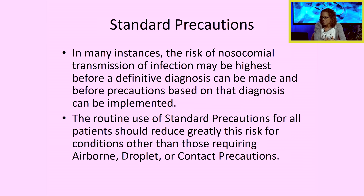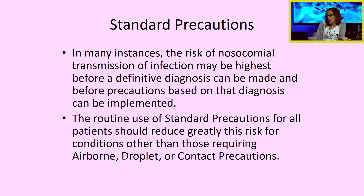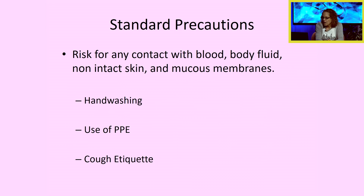Similarly, in a suspected case of tuberculosis, if we think a patient might have TB, we'll put them on isolation before the official diagnosis because lab results take time and we don't want to spread infection while waiting. The routine use of standard precautions for all patients should greatly reduce the risk beyond those cases requiring airborne, droplet, or contact precautions. Standard precautions include good hand washing, use of PPE, and good cough etiquette — coughing into your elbow.